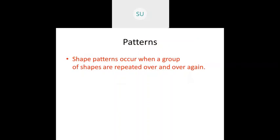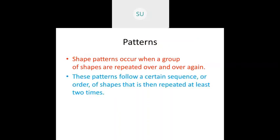Shape patterns occur when a group of shapes are repeated over and over again. For example, a square, a rectangle, and a triangle repeating again and again forms a pattern. These patterns follow a certain sequence or order of shapes that is repeated at least two times to be called a pattern.